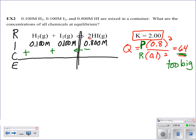So that's why we went through that process, so that we could determine which direction it would proceed. So now we can go ahead and look at our variables. We're just going to call this x, x, and 2x. So when we add this up, we get 0.1 plus x, 0.1 plus x, and 0.8 minus 2x.